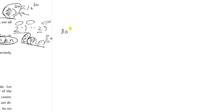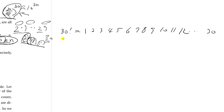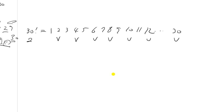Let's write down 30 factorial: that is 1 × 2 × 3 × 4 × 5 × 6 × 7 × 8 × 9 × 10 × 11 × 12 ... up to 30. The first thing we need to check is: how many 2s appear in this product? Every other number is divisible by 2, so we count floor(30/2) = 15. So we already have 15 factors of 2.